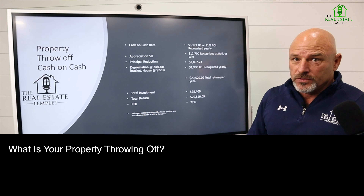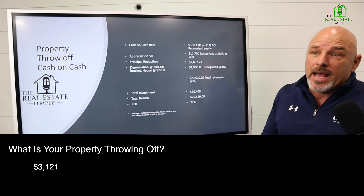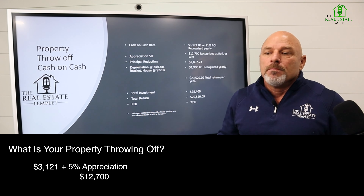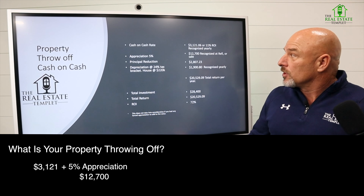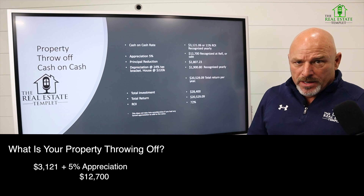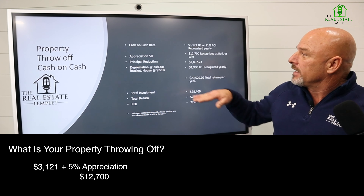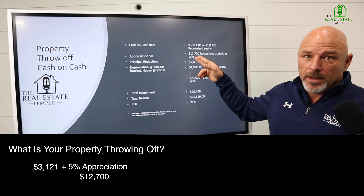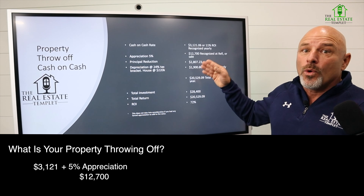We're going to talk about what that property is throwing off — not just your cashflow, but what the property actually throws off to you. Our cash on cash rate is $3,121. Now we're going to use 5% appreciation. Most people say don't put appreciation in a deal, but if you go back and look at history over the last 50 years, appreciation is going to show up at 5% or better over a 50-year period. I'm not counting on appreciation to make my living, but if I'm holding that property for 10, 15, or 20 years, that appreciation is going to show up, so I am not going to leave it out of my calculations — that is part of my deal.